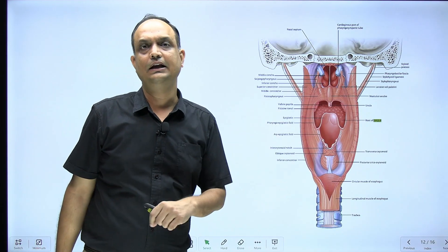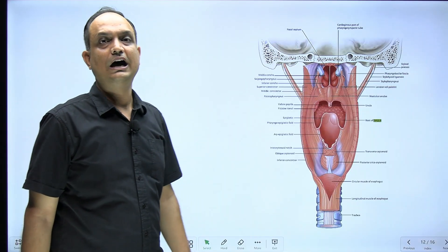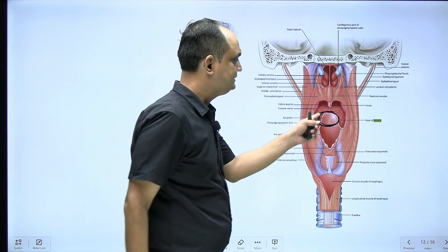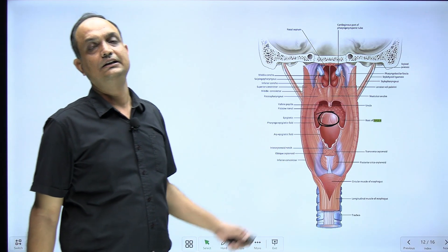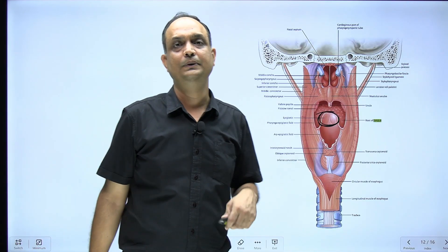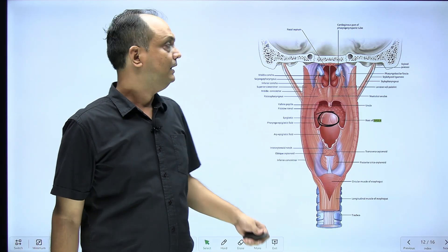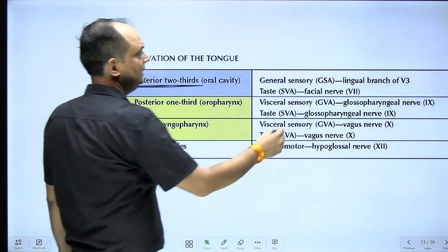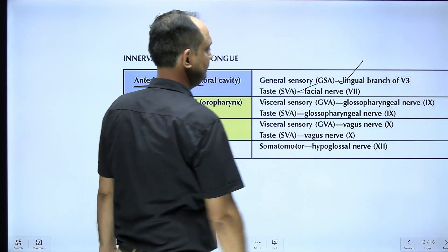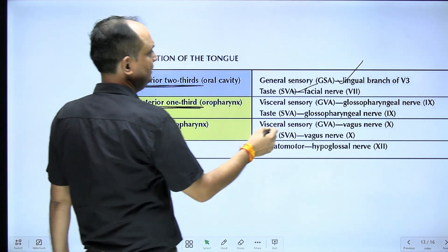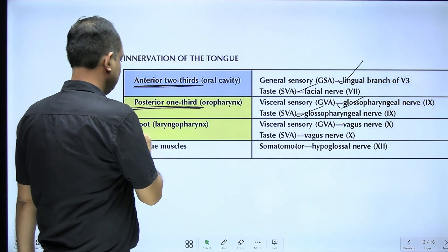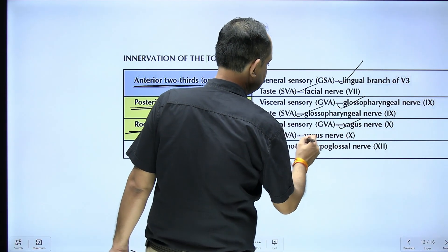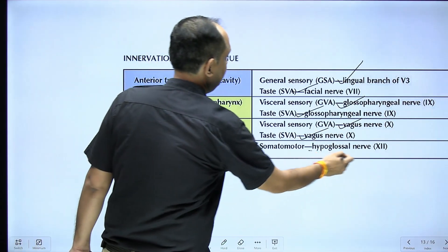In summary, the posterior-most part of the tongue is visible alongside the epiglottis and develops from the fourth pharyngeal arch, supplied by the vagus via the superior laryngeal nerve. The anterior two-thirds is supplied by the lingual branch of the mandibular nerve and the chorda tympani of the facial nerve. The posterior one-third is supplied by the glossopharyngeal nerve. The root (posterior-most area around the vallecula) is supplied by the superior laryngeal branch of the vagus. All muscles are supplied by the hypoglossal nerve.